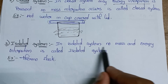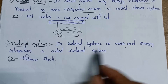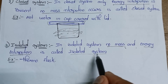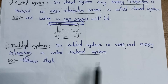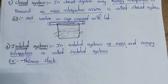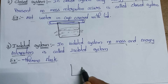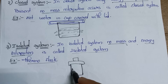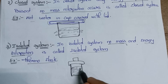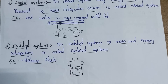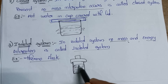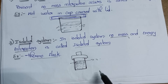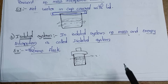In an isolated system, no mass and no energy interaction or transfer occurs. This is called an isolated system. An example is a thermos flask — inside the thermos flask, heat energy cannot be transferred to the outside. Thanks for watching this video, please subscribe to the channel.